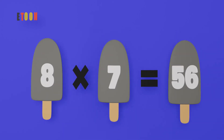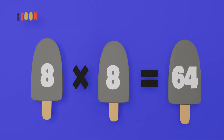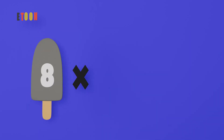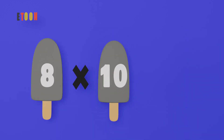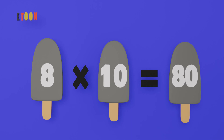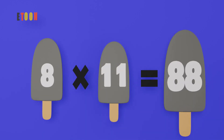8 times 7 is 56, 8 times 8 is 64, 8 times 9 is 72, 8 times 10 is 80, 8 times 11 is 88.